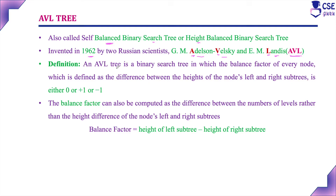Definition: AVL tree is nothing but a binary search tree in which the balance factor of every node is defined as the difference between the height of the node's left and right subtrees. This balance factor is either 0, plus 1, or minus 1.